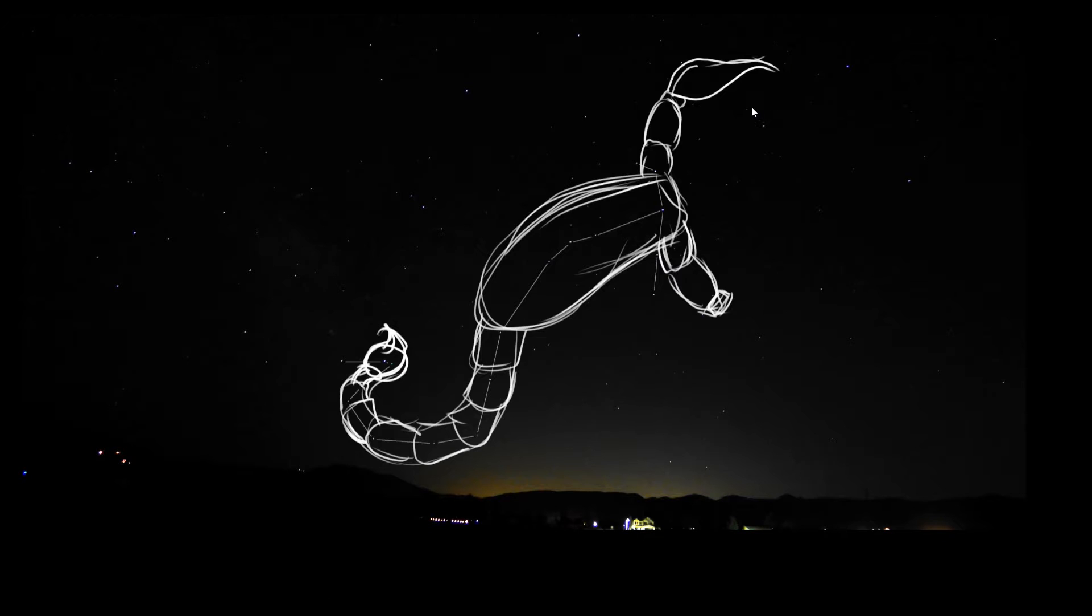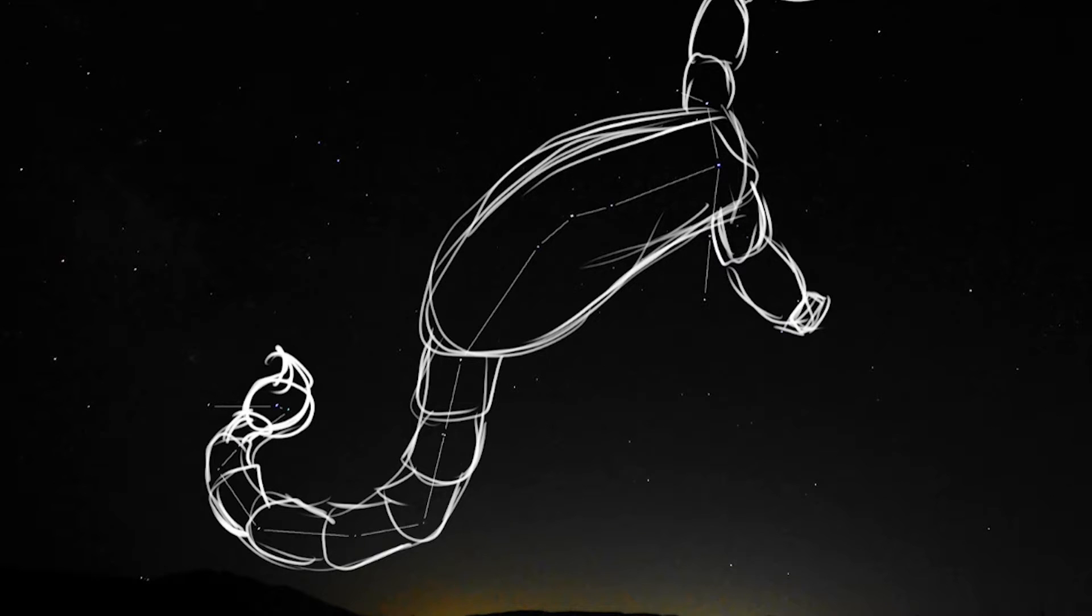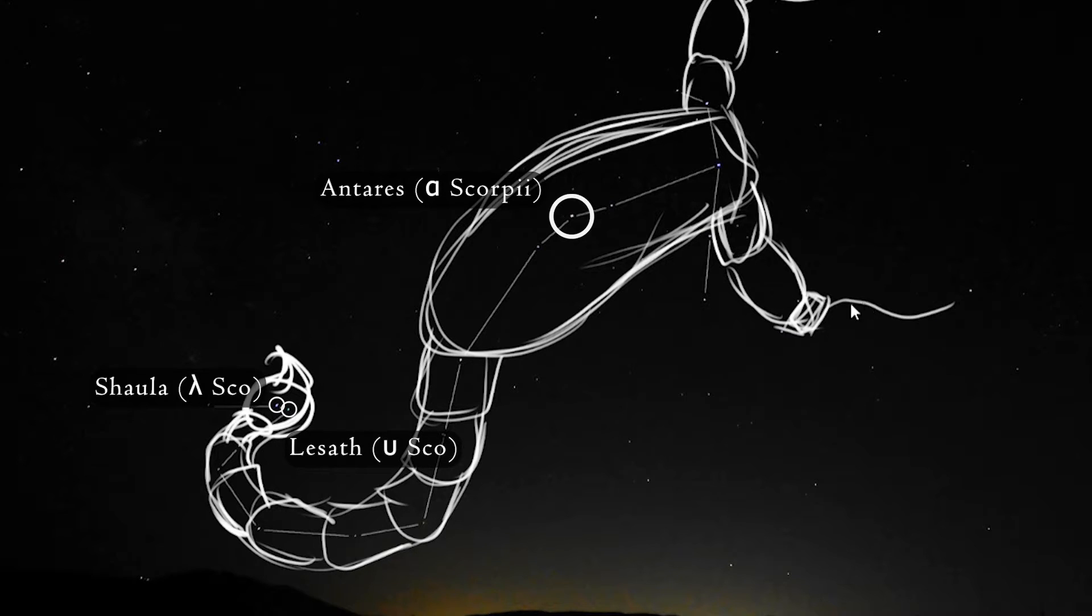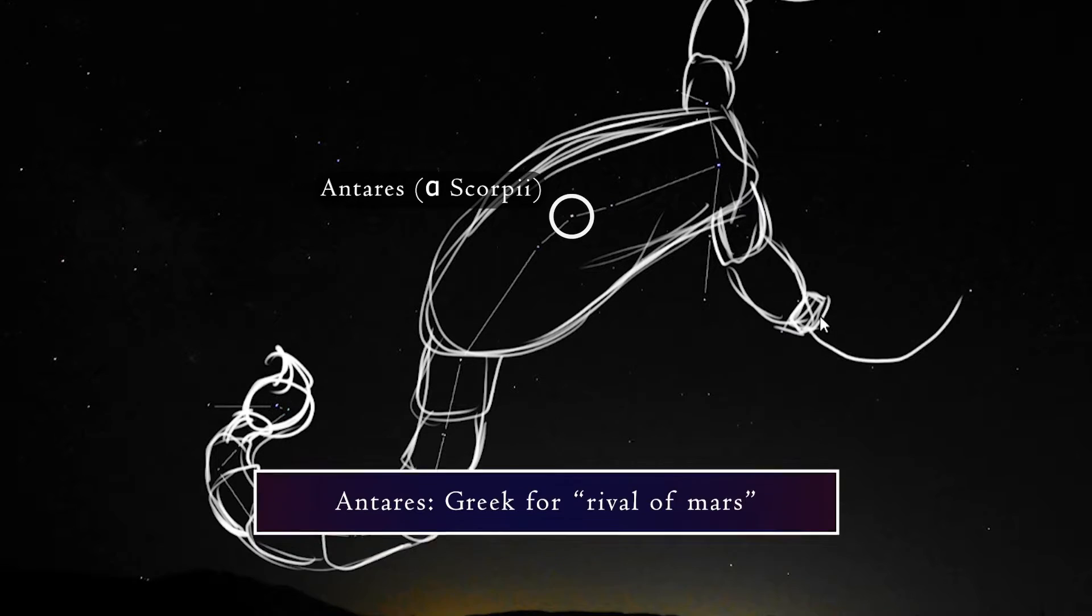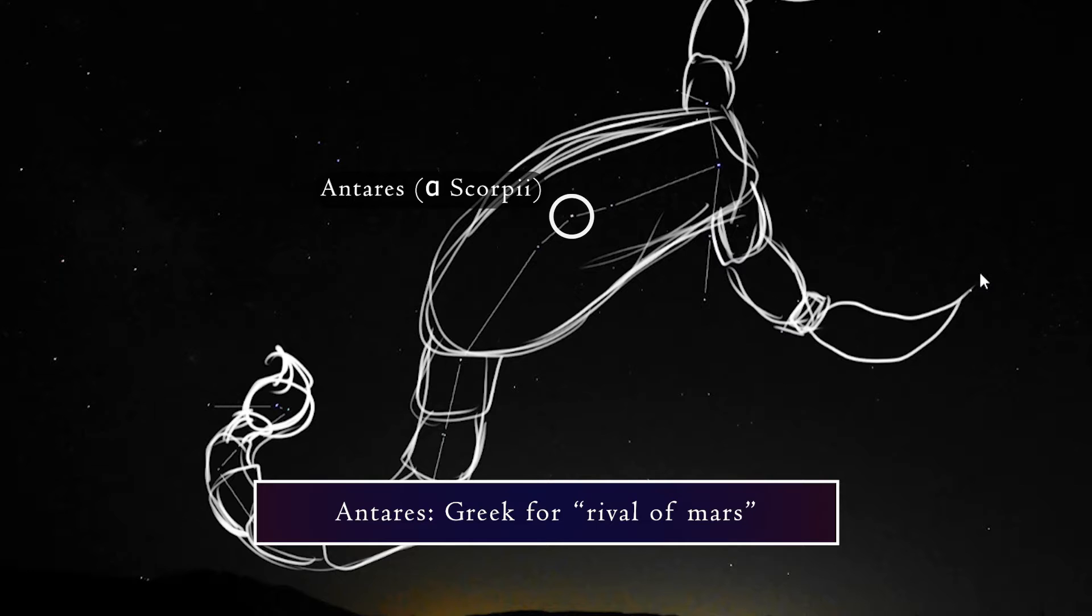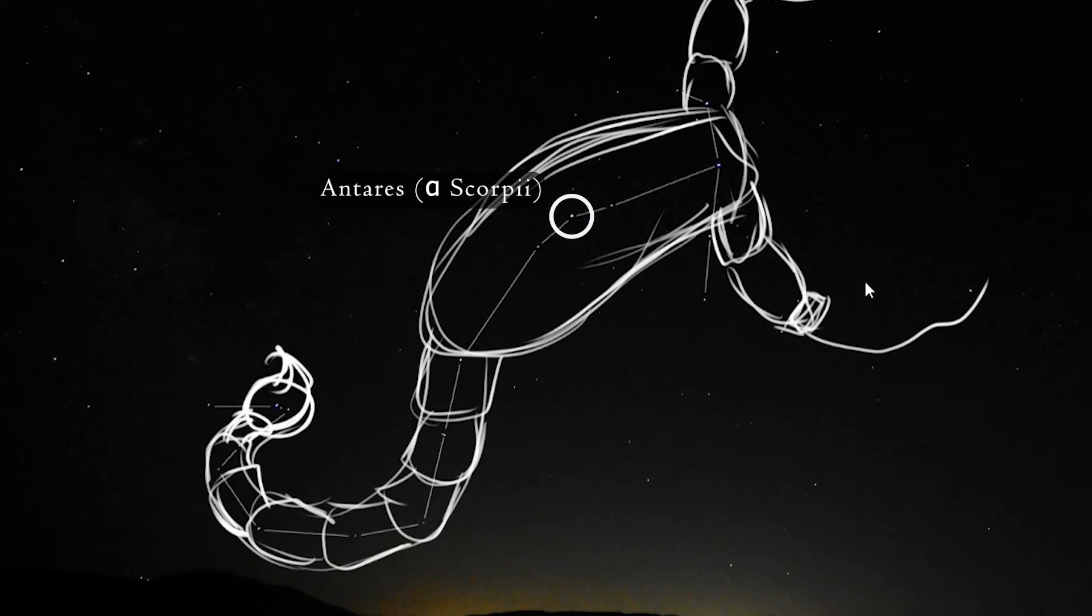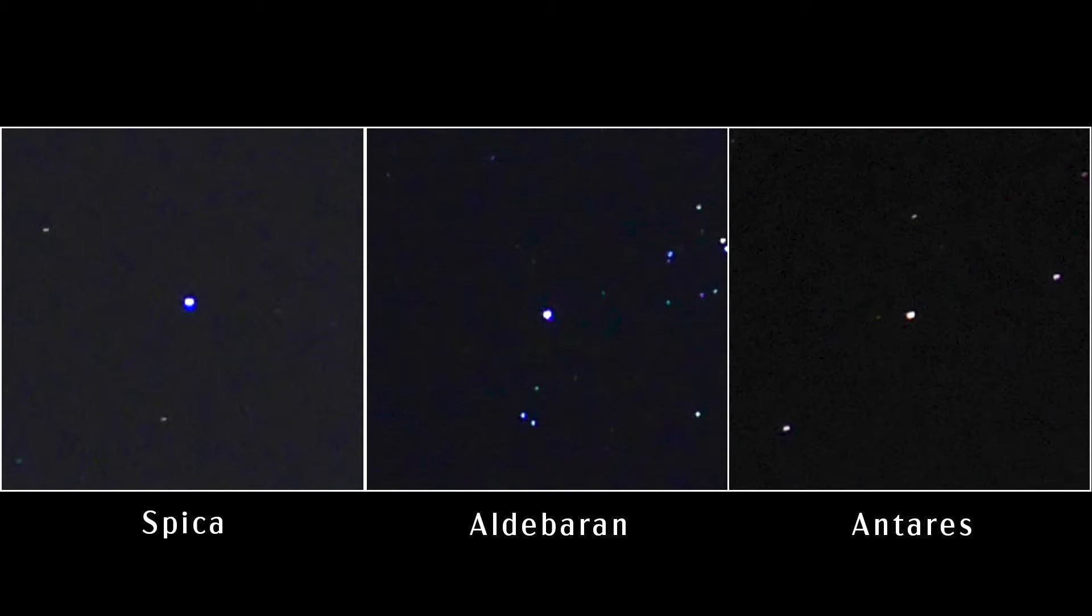Some of the notable stars in Scorpius include Antares, or Alpha Scorpii, Lesath, or Epsilon Scorpii, Shaula, also called Lambda Scorpii, and Dschubba, or Delta Scorpii. Antares is Greek for rival of Mars, which is fitting because, like Mars, it has a reddish hue. It is a relatively bright star, similar in magnitude to Spica, which is in Virgo, and Aldebaran from Taurus.